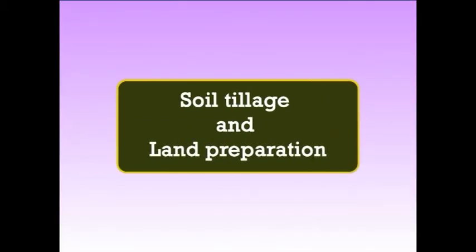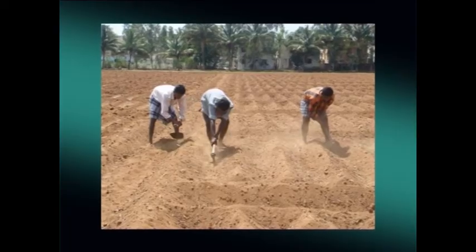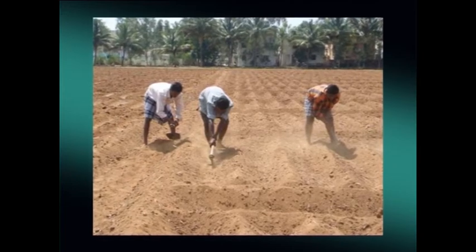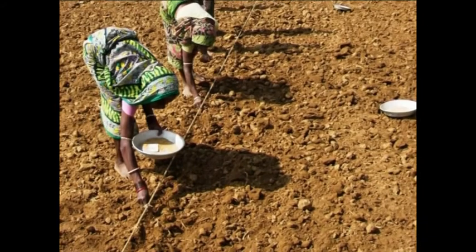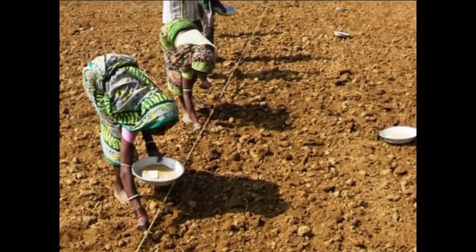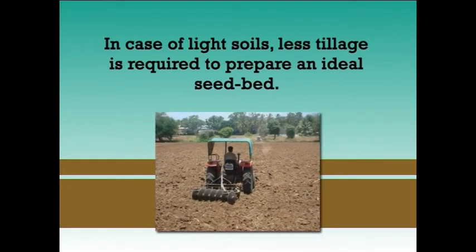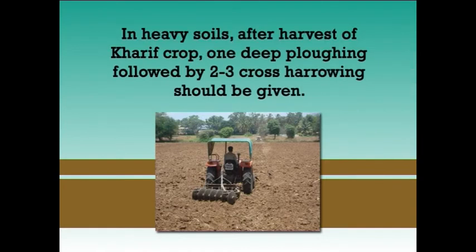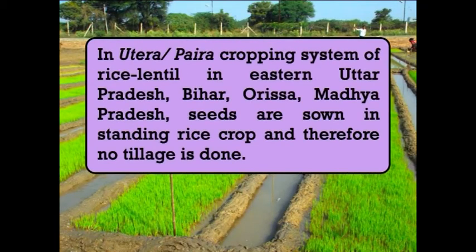The first cultural practice is soil tillage and land preparation. Soil should be made fine and free from weeds so that seed can be placed at a uniform depth. In case of light soil, less tillage is required to prepare an ideal seed bed. In heavy soils, after harvest of the previous crop, one deep plowing followed by two to three cross harrowings should be given. In the utera or pyra cropping system of rice-lentils in eastern UP, Bihar, Orissa and Madhya Pradesh, seeds are sown in standing rice crop and therefore no tillage is done.